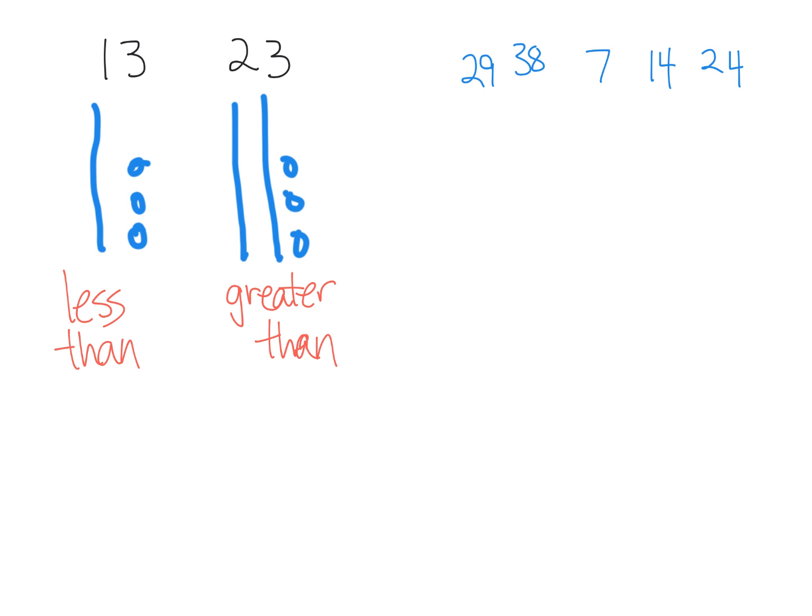Now let's say we've got these numbers over here, so we've got 29, we've got 38, 7, 14 and 24, and we want to sort them in order from least to greatest. The idea, parents and teachers, is we want to start with the beginnings of a number line.